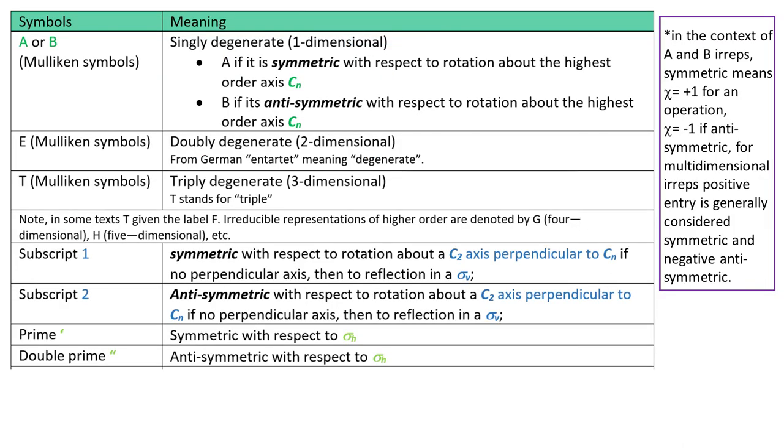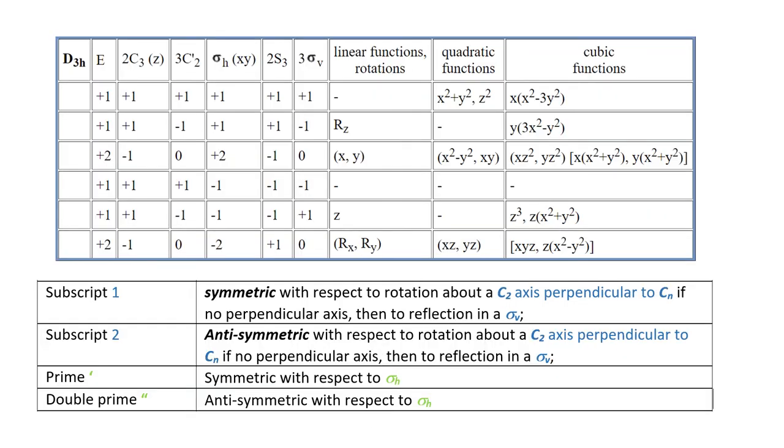So let's introduce some more symbols. Prime and double prime are used to describe symmetric and anti-symmetric behavior with respect to sigma horizontal. So let's do some examples.